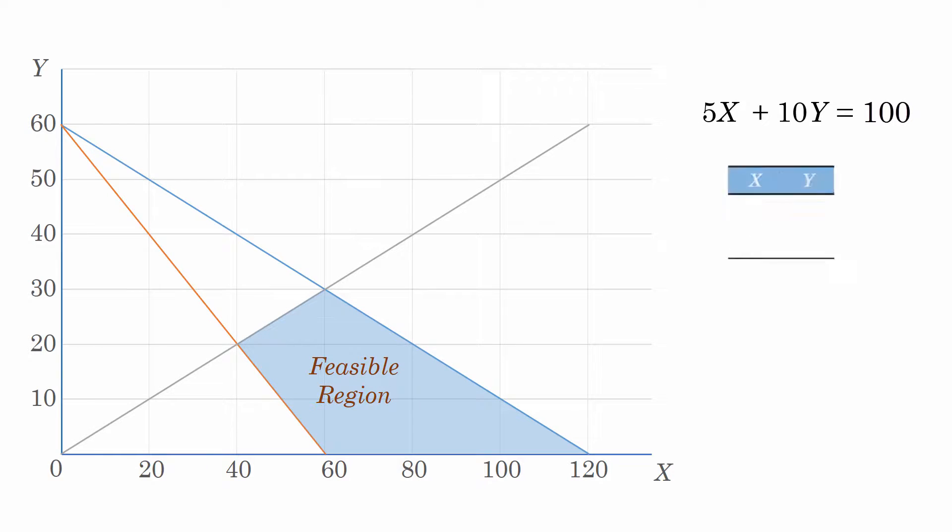So for the profit line, when x is 0, y is 10, and when y is 0, x is 20. Thus, we have an instance of the profit line here.